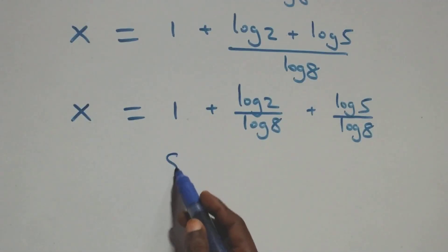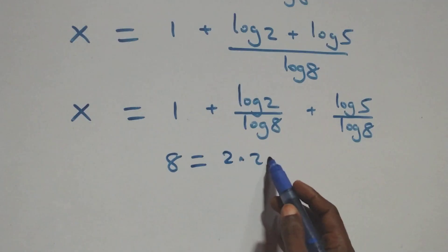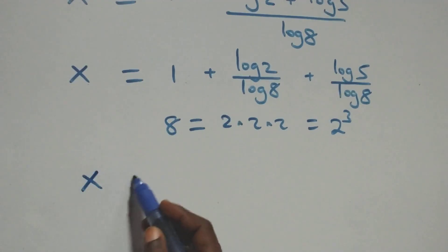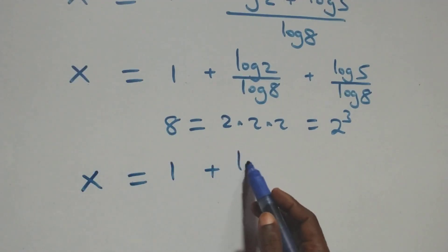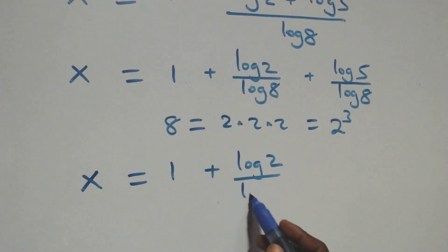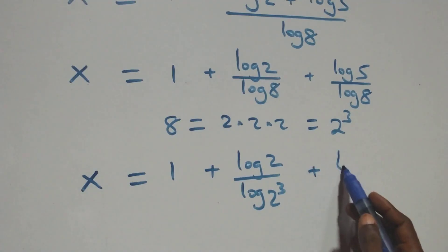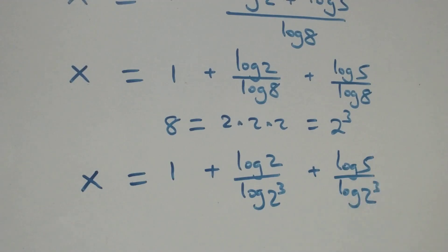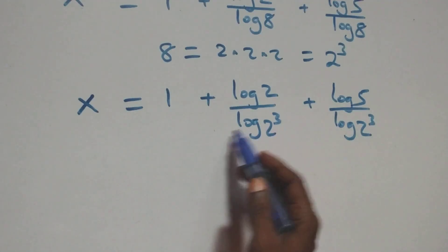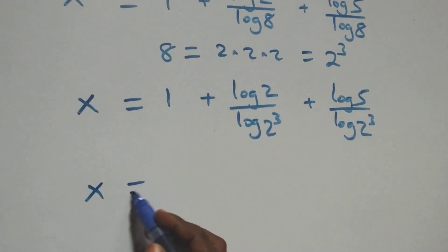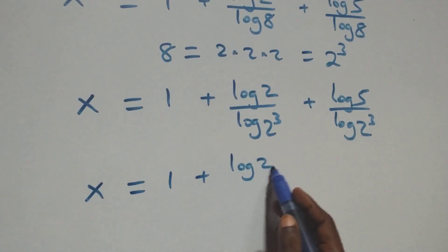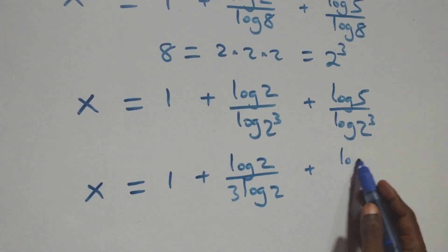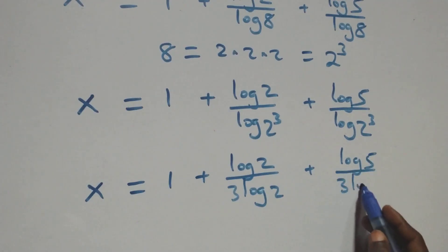We have 8 equals to 2 times 2 times 2, which is the same thing as 2 raised to the power 3. So we have x equals to 1 plus log 2 over log(2 cubed) plus log 5 over log(2 cubed). Applying the power rule of logarithm, the 3 comes down in both terms.